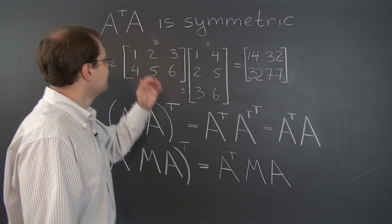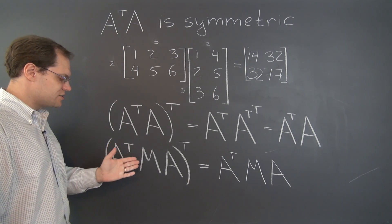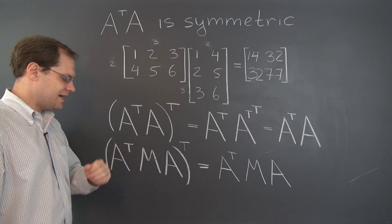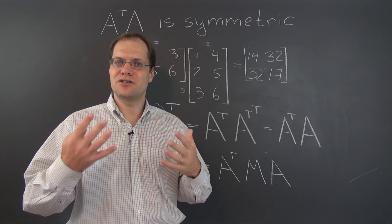So there you go. We have just proved in two different ways that the combination A transpose A and more generally A transpose M A, where M is a symmetric matrix, is necessarily itself a symmetric matrix.